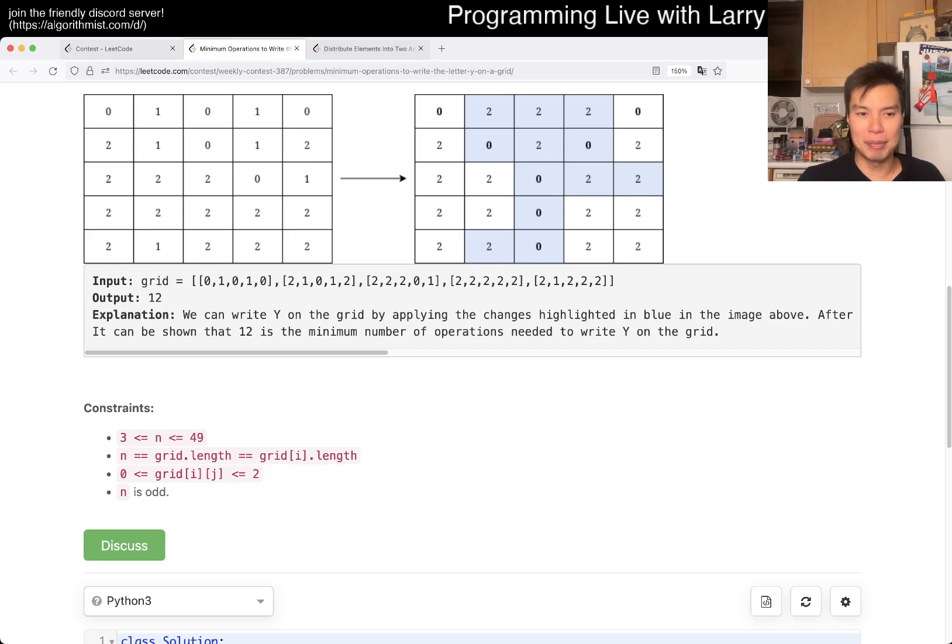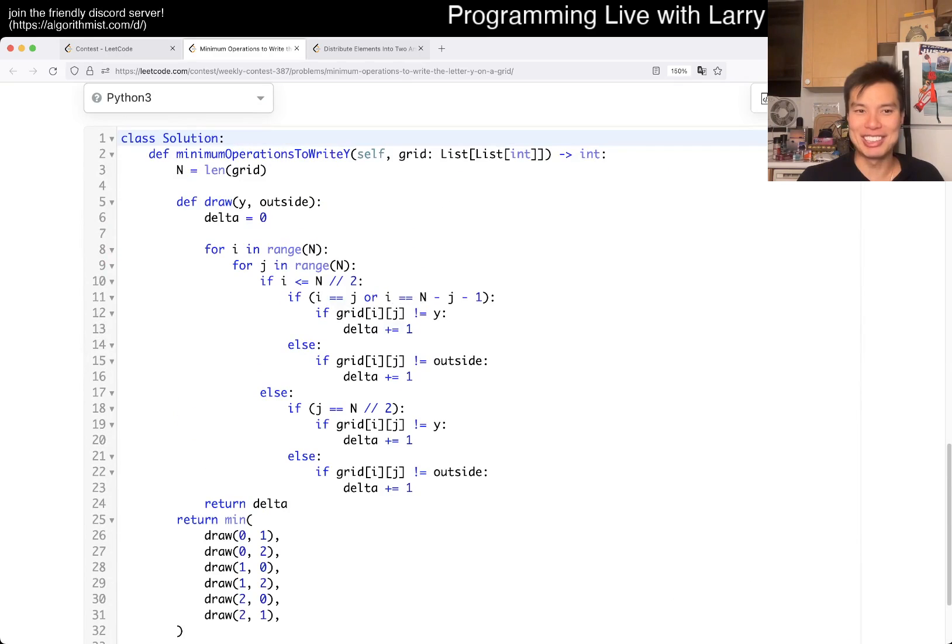And because they can only be 0, 1, and 2, I literally just go, I wrote the code for checking how much it would cost if Y is a certain color and outside is a certain color. And basically, this is the loop that we talked about. We look at every cell. So if this is on the upper half, then it has to be on the diagonal. If not, then it's outside.